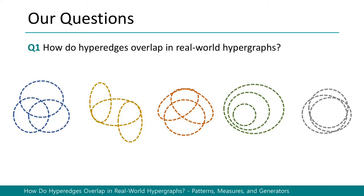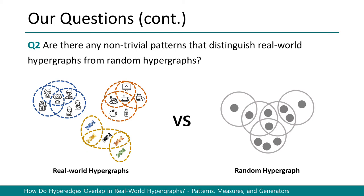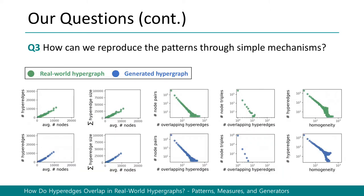We propose tools for answering three interesting questions. First, how do hyper-edges overlap in real-world hypergraphs? Hyper-edges can overlap in infinitely different ways, so it is much more complicated and difficult to analyze such patterns than in graphs. Second, are there any non-trivial patterns that distinguish real-world hypergraphs from random hypergraphs? We compared the overlapping patterns in real-world hypergraphs to those in random hypergraphs. Third, how can we reproduce the patterns through simple mechanisms? We propose a novel hypergraph generation model that creates realistic hypergraphs preserving observed patterns.